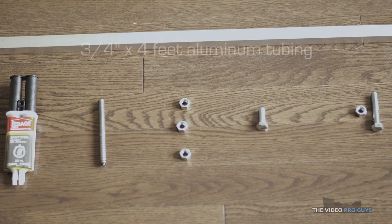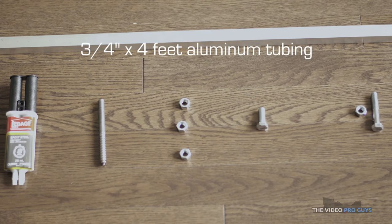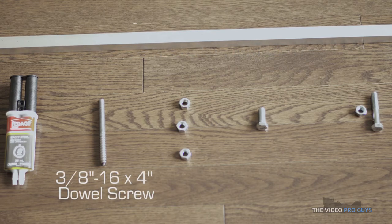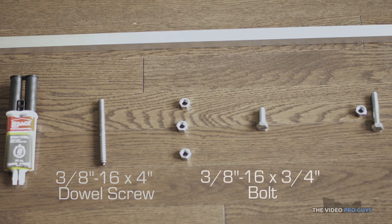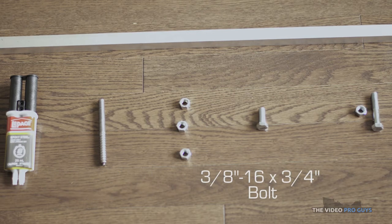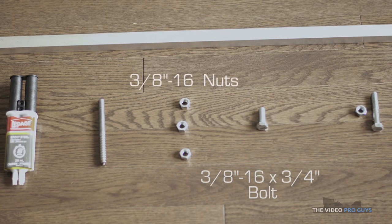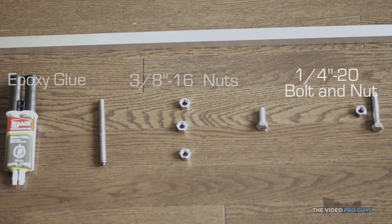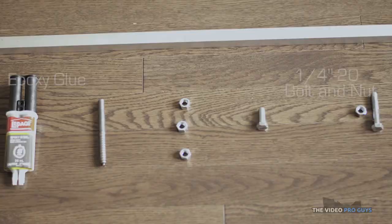For this build you'll need one 3/4 inch by 4 feet aluminum square tubing, one 3/4 by 4 inches long dowel screw or double-ended screw, one 3/4 by 3/4 inch long bolt, three 3/4 nuts, and epoxy glue.